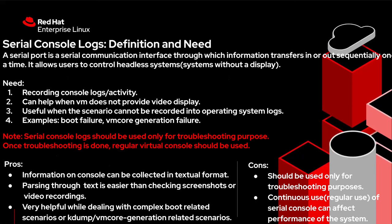Now let's discuss the need for serial console logs. The basic use of serial console is recording console logs or activity happening on the console. They are very helpful in scenarios where information cannot be recorded into operating system logs — for example, where a system is not able to boot, or where the speed of the regular or virtual console is so fast that we are not even able to see the error. Another scenario is where VM core generation is failing and we cannot see the error on the regular or virtual console. In both scenarios it is very helpful to get the entire activity in a textual format, which is possible with serial console logs.